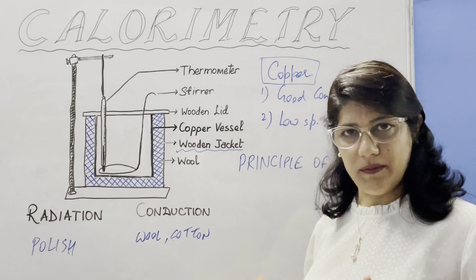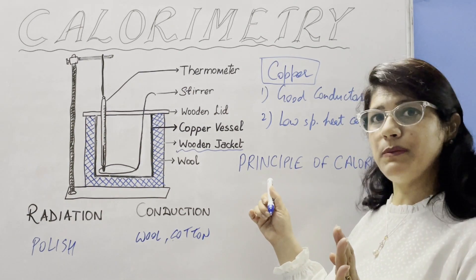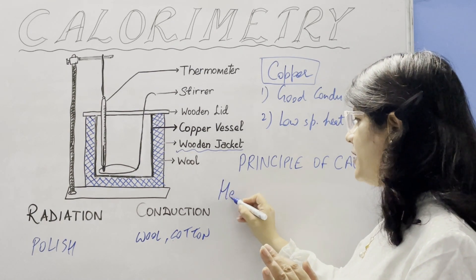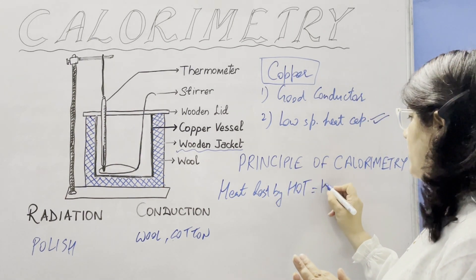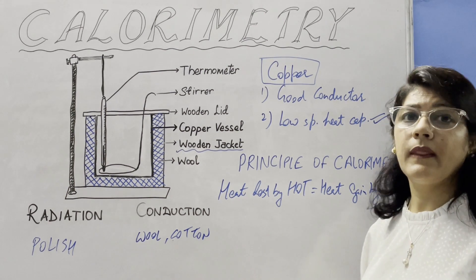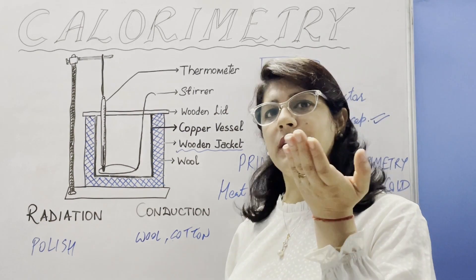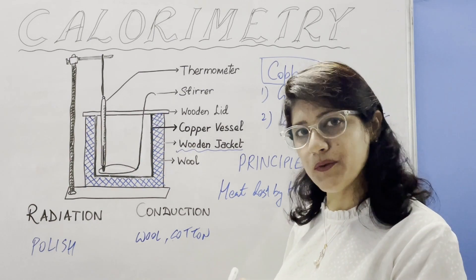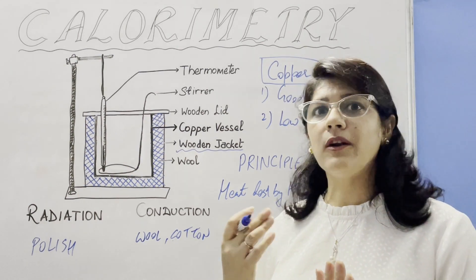Now we will talk about the principle of calorimetry. If the system is perfectly insulated, then the heat energy lost by the hot body is equal to the heat energy gained by the cold body. The temperature of the cold body is less, so its temperature increases, while the temperature of the hot body decreases. The final temperature settles in between the temperatures of the two bodies.